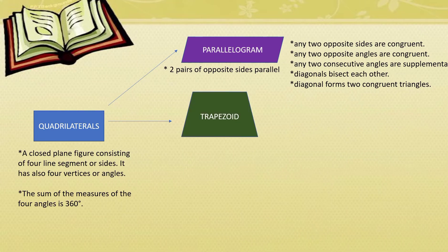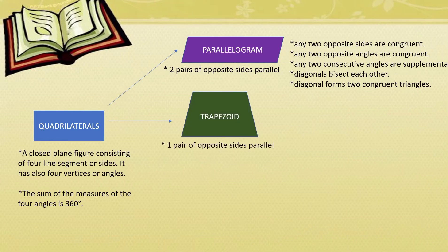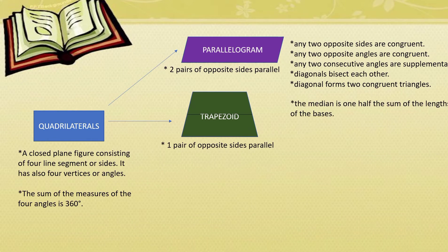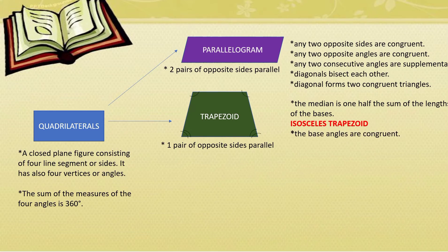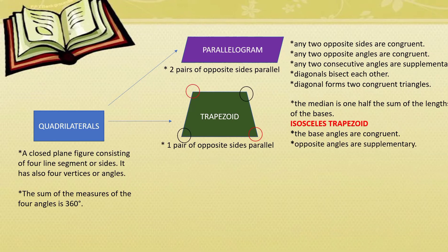We have also the trapezoid. Remember, it has only one pair of opposite sides parallel. The median is one half of the sum of the lengths of the bases. An isosceles trapezoid is a trapezoid wherein the two non-parallel sides or the legs are congruent. In an isosceles trapezoid, the base angles are congruent, as indicated in the figure.